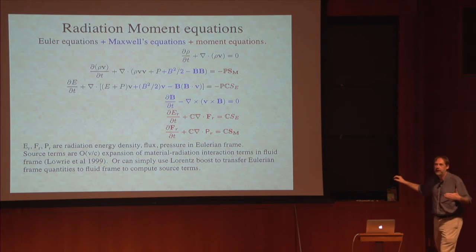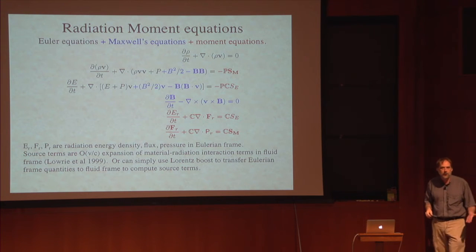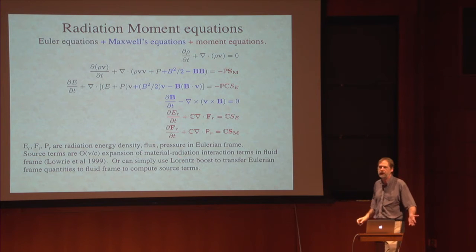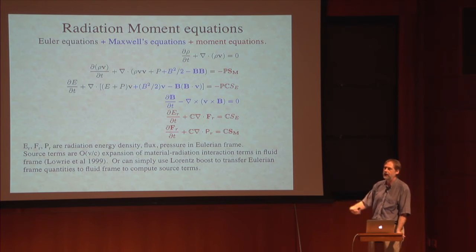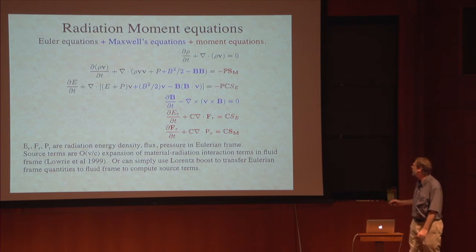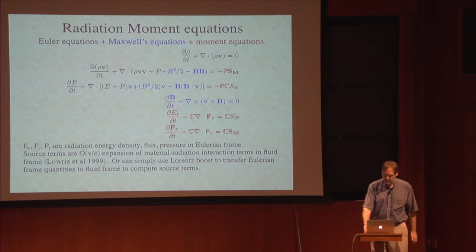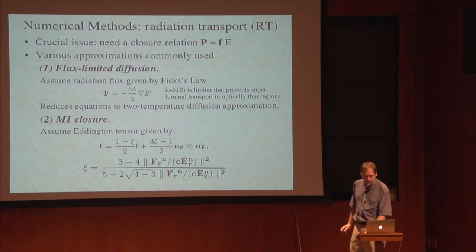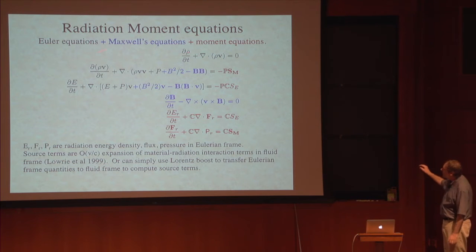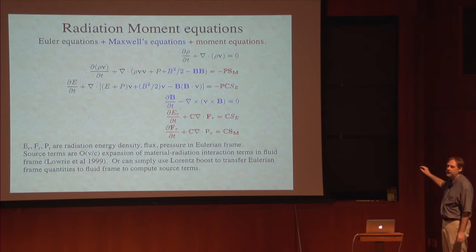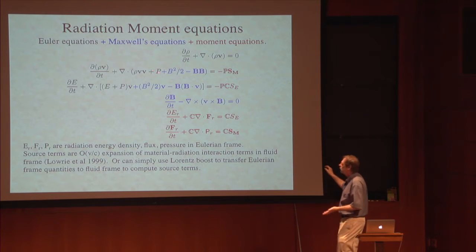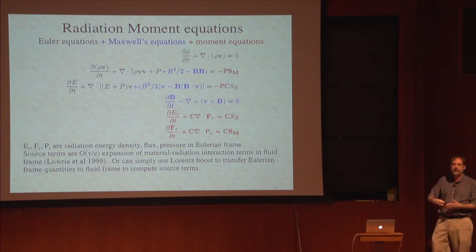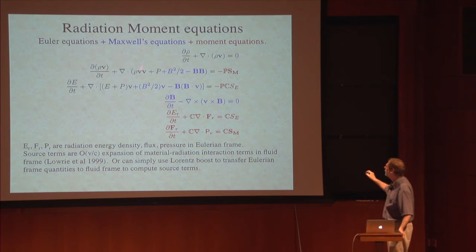You can either do these transforms analytically using order v/c expansions to get analytic forms for the terms, or you can simply Lorentz boost the quantities at every time step to compute the source terms and then Lorentz boost them back into the lab frame. Either way works just fine. The issue in solving these equations comes down to closure. We know from the hydro equations that it involves a higher moment P, but we have an equation of state relating this second moment to lower-order moments — P is a function of density and temperature.